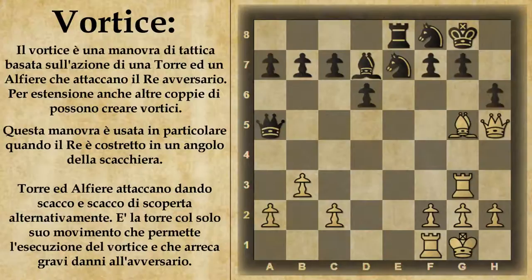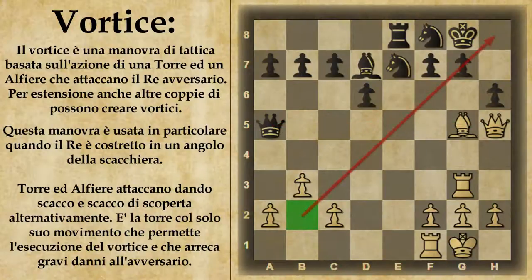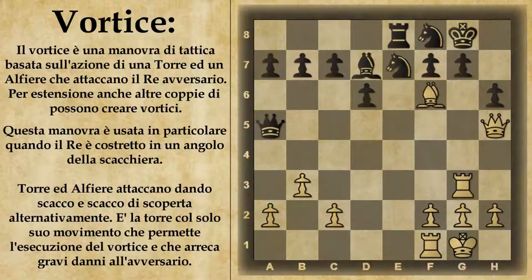Andiamo quindi ancora a questa posizione. La mossa sta al bianco, ma si può vedere che il bianco è messo piuttosto male: ha molto meno materiale e inoltre c'è questo alfiere che è attaccato dal pedone ed è inchiodato dalla donna avversaria. Tuttavia qui il bianco può pensare di mettere appunto un vortice: anche se l'alfiere non è su questa diagonale, il bianco può sfruttare una mossa per mettercelo, e questa mossa è alfiere f6. Addirittura il bianco si può disinteressare del fatto che il nero catturi la donna, perché tanto potrà poi mettere un vortice che gli permette di recuperare tutto il materiale perso.